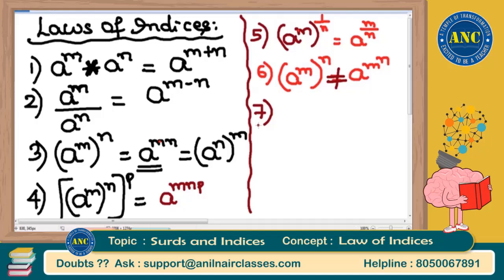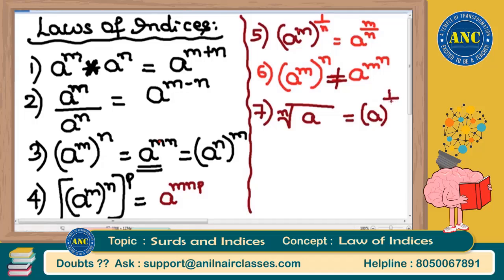Another law: if we have the nth root of a, we can write it as a^(1/n). For example, the square root of a is a^(1/2), and the fourth root of a is a^(1/4). These are extra laws you can derive when required.